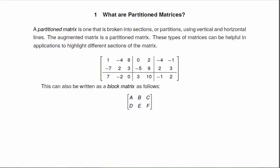It's just one that's broken into different sections, or partitions, using vertical and horizontal lines. The augmented matrix is the first partition matrix we dealt with. And these can be helpful if we want to highlight particular sections of a matrix.